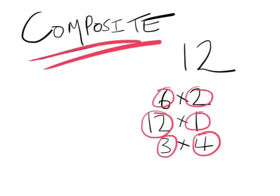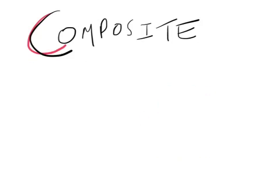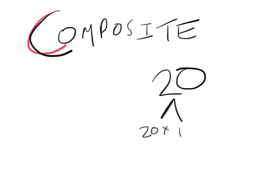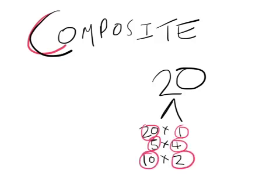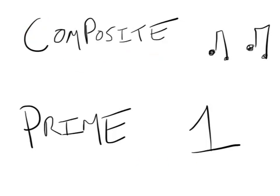Let's look at another composite — the number 20. Twenty is a composite number. The factors of 20 are: 20 times 1, five times four, ten times two — plenty. If there were only 20 and 1, it would be prime, but there's also five and four, and ten and two, so it's a composite number.